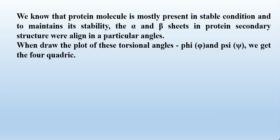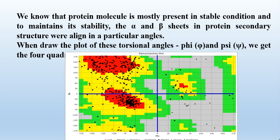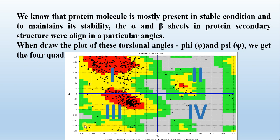Protein molecules are mostly present in a stable condition, and to maintain stability the alpha and beta sheets in the protein secondary structure align at a particular angle. When we draw the plot of the phi and psi angles, we get four quadrants. The phi angle is on the x-axis while the psi angle is on the y-axis, each ranging from minus 180 to plus 180.